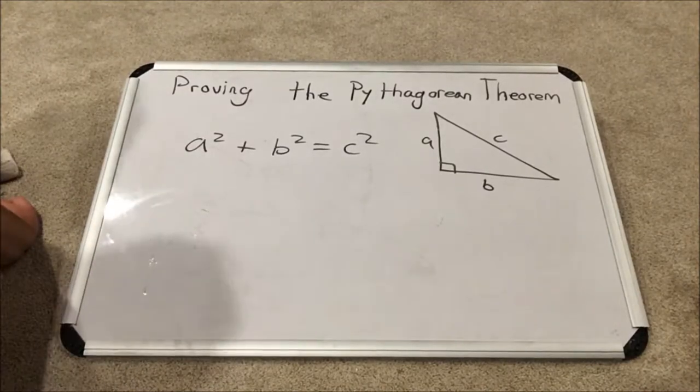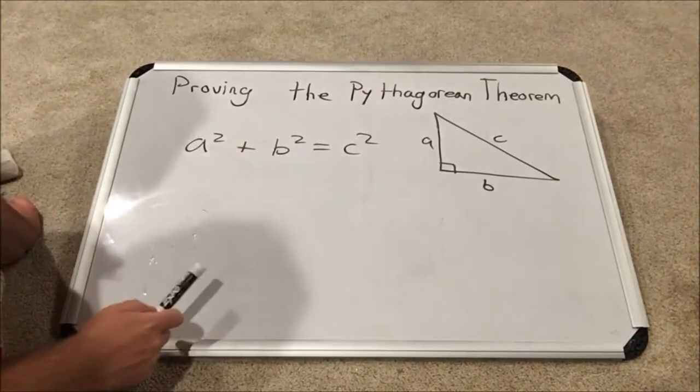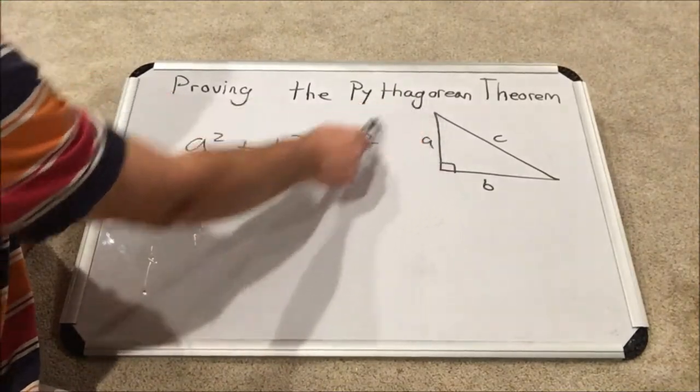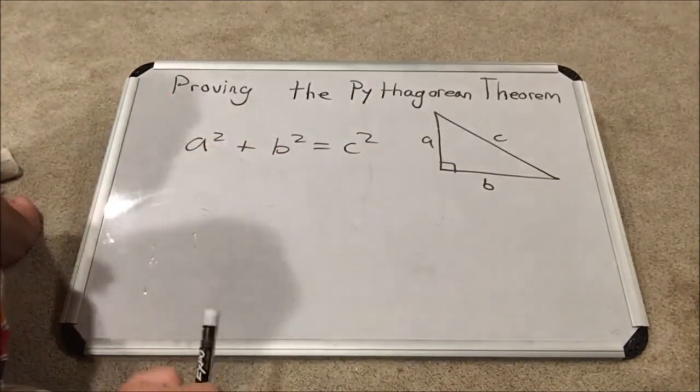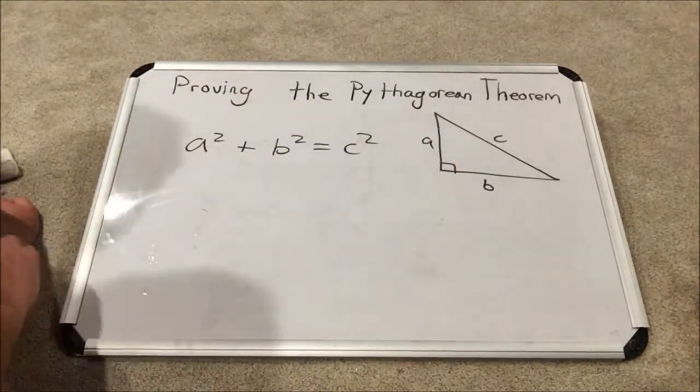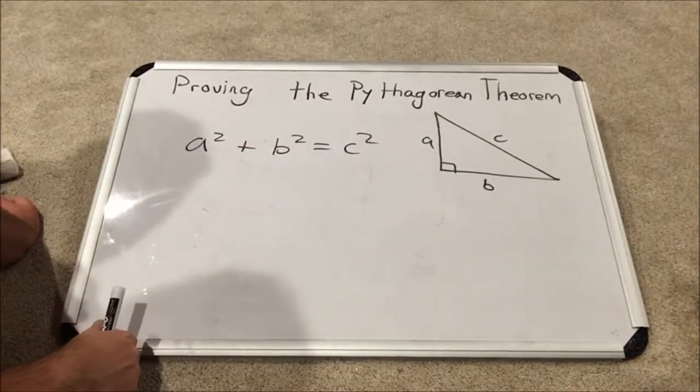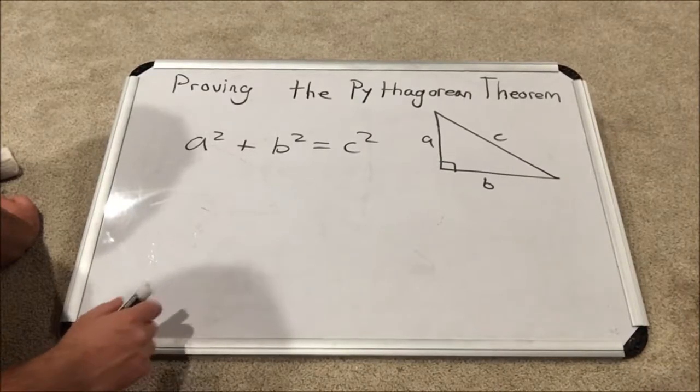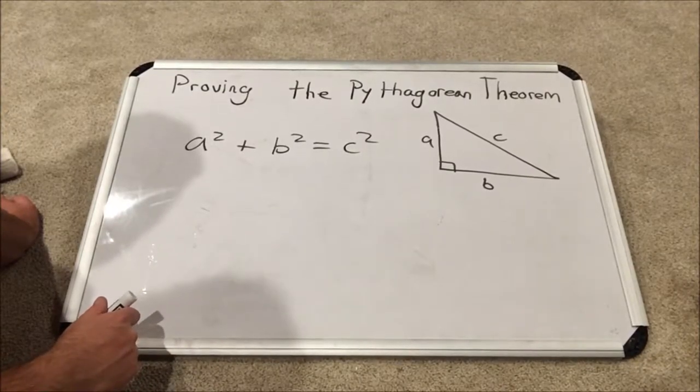This formula is used in right triangles and it says that the sum of the squares of each leg of the triangle when added together is equal to the square of the hypotenuse. It's true for every right triangle and it comes from Pythagoras in the early days of the Greek Empire.